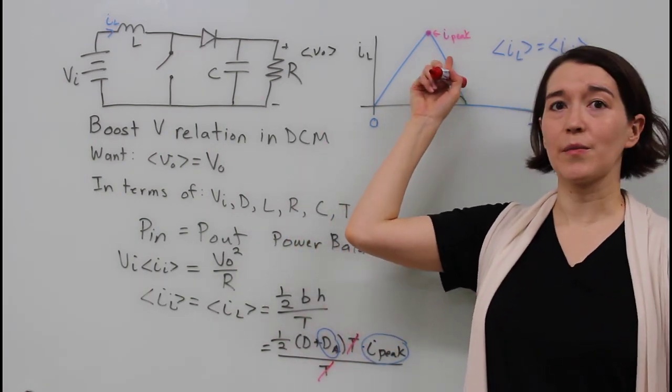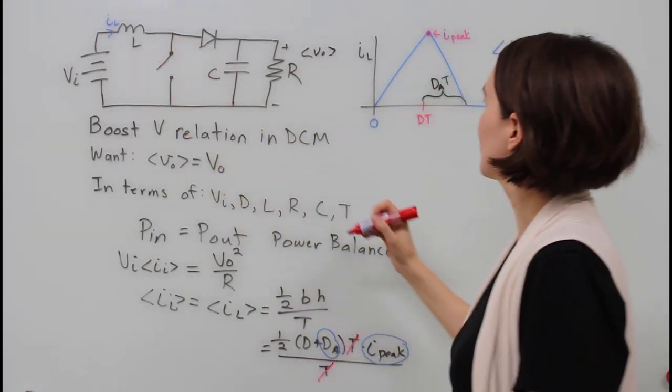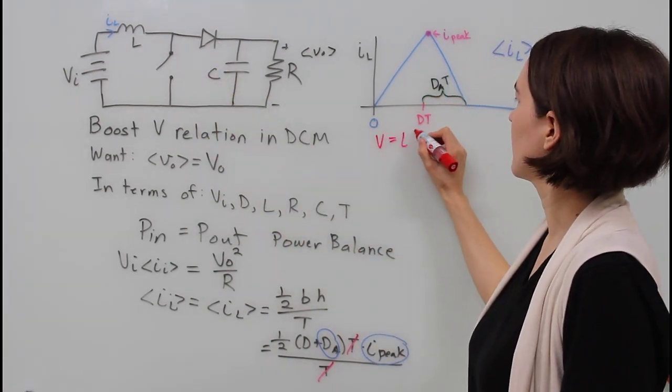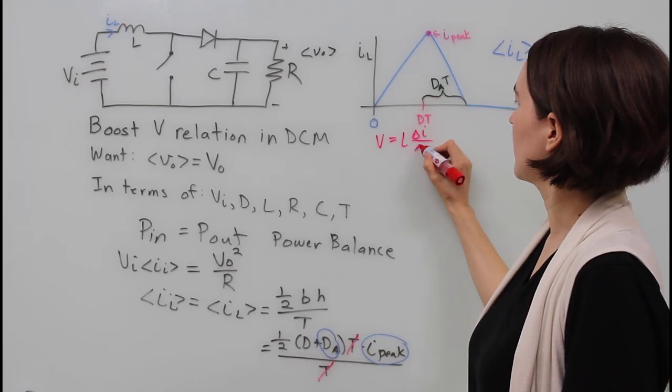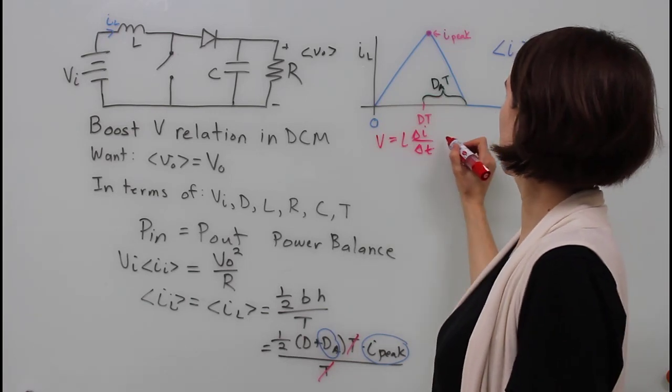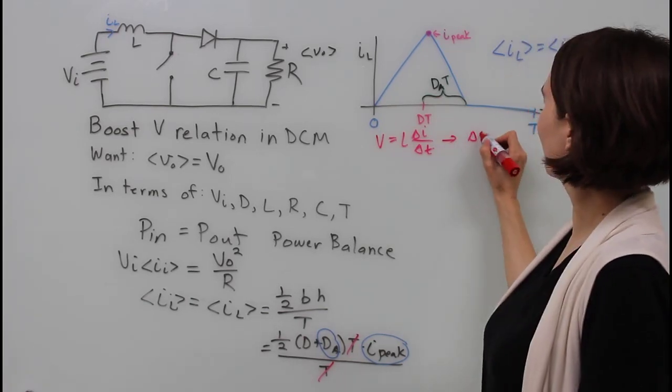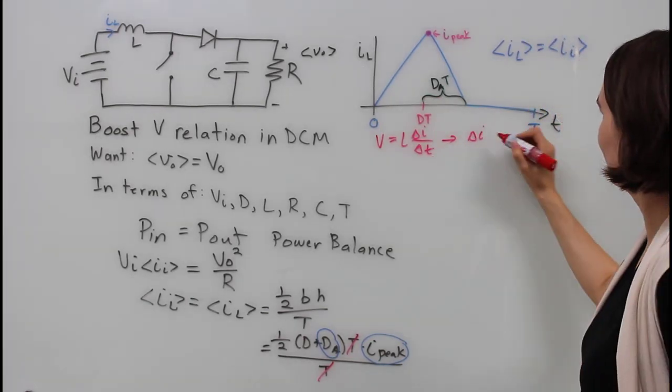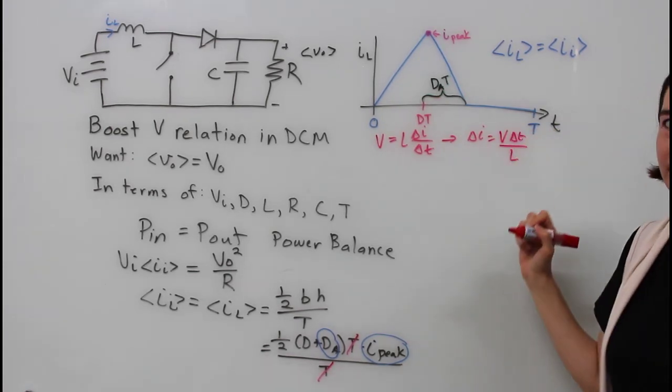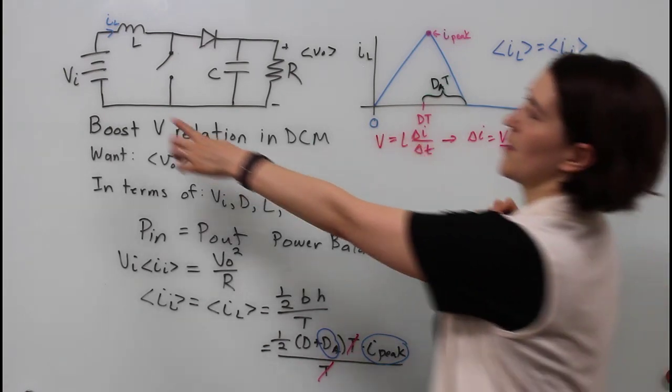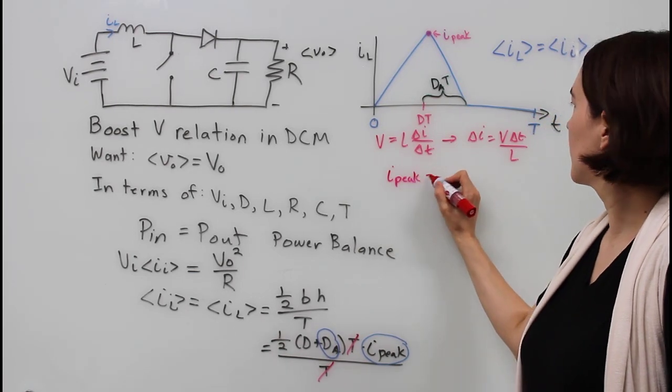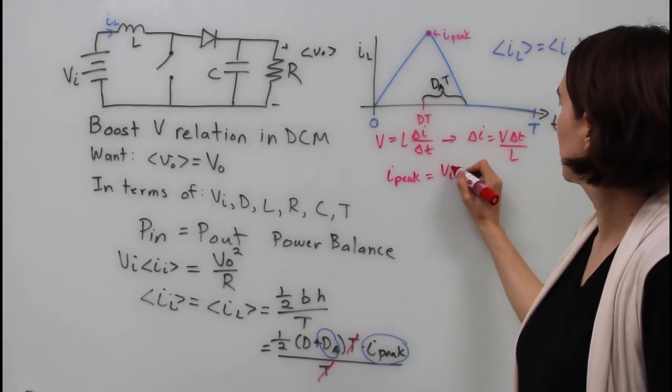To figure out I peak, we can look at the inductor equation. We know that V equals L di/dt. We can change it into deltas, then we can look at the delta I and we're going to try to match that delta I to the peak value. So we rewrite that as delta I equals V delta T over L, then we replace the values that we wanted to find out. So I peak is the value we're looking for, and then we have input voltage times D times T over L. So now that's the I peak value.